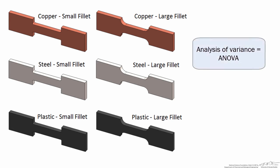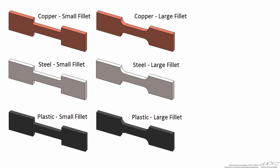As the name implies, a two-factor analysis of variance allows you to decide whether or not two factors make a significant difference in your experiment. As an example, let's look at these specimens known as dog bones. They're made of materials — copper, steel, and plastic — and at both ends of the dog bone you would clamp these into a machine. The machine would slowly pull apart the dog bone and measure the force needed to break that material.